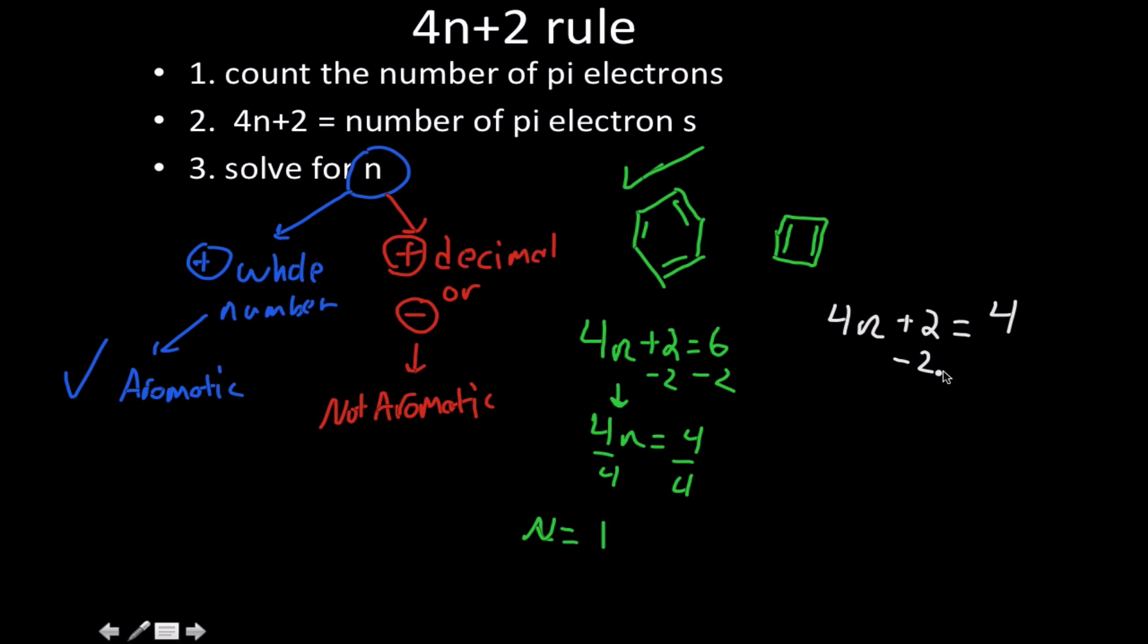And then I subtract both sides by 2. 4n is equal to 2. Divide that by 4. I get n is equal to 1 half, or I could say just represent that as 0.5.